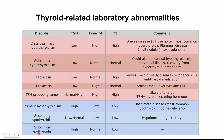Lastly, subclinical hypothyroidism presents with a high TSH, just like primary hypothyroidism, but T4 and T3 aren't necessarily responding much — T4 is normal, and T3 can be normal or low. I hope this review of thyroid-related disorders was helpful in understanding the lab abnormalities that help differentiate them. Thank you for listening.